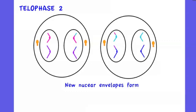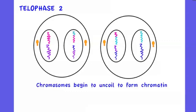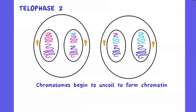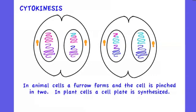In telophase 2, new nuclear envelopes form around the chromosomes. As before, the chromosomes unravel to form chromatin. Cytokinesis then follows this second division to form a final four cells.